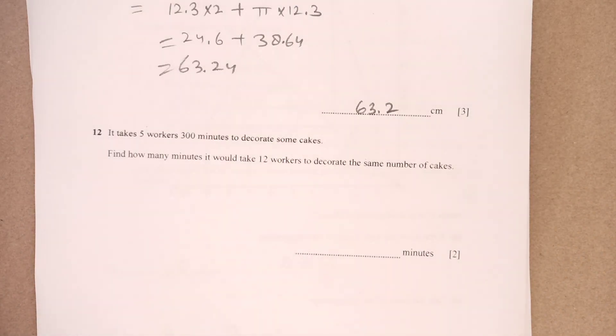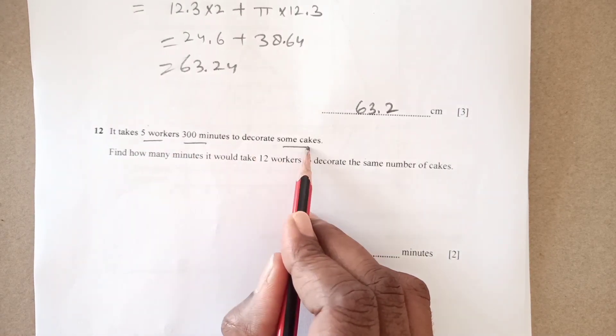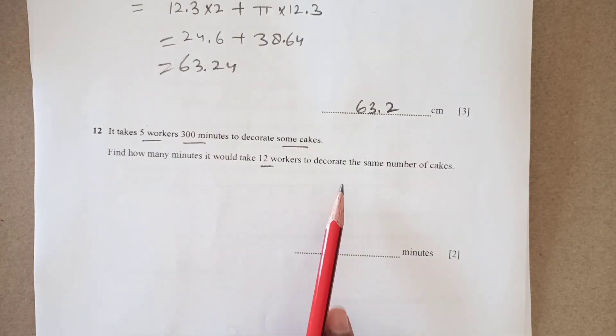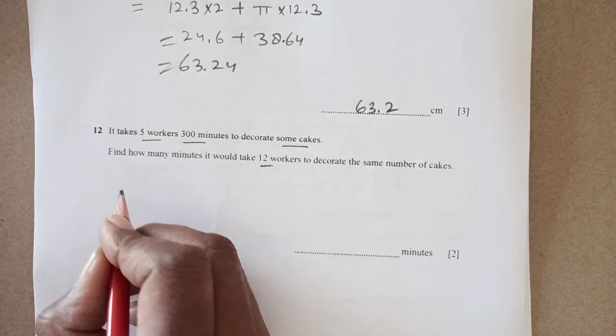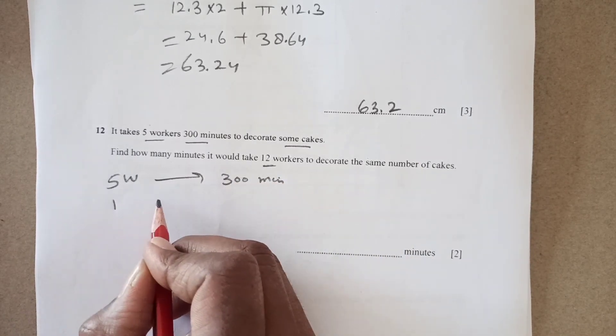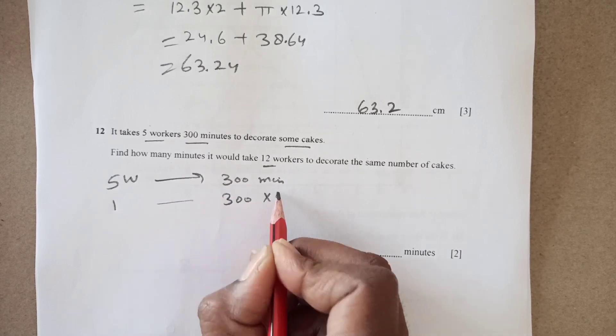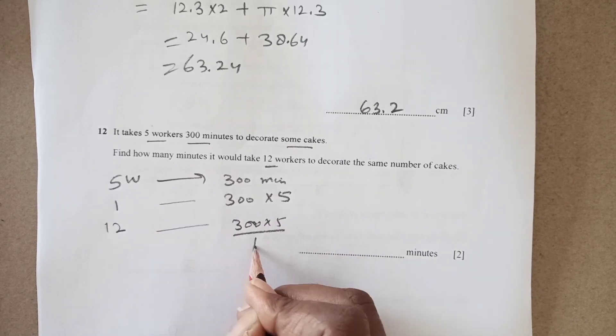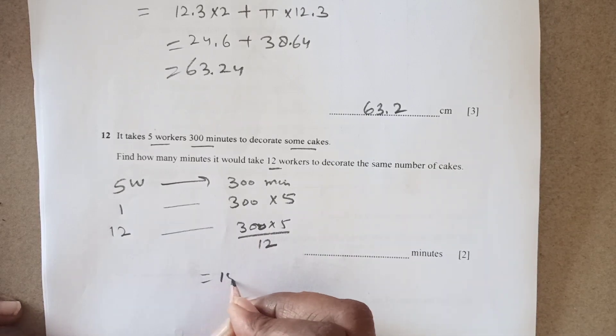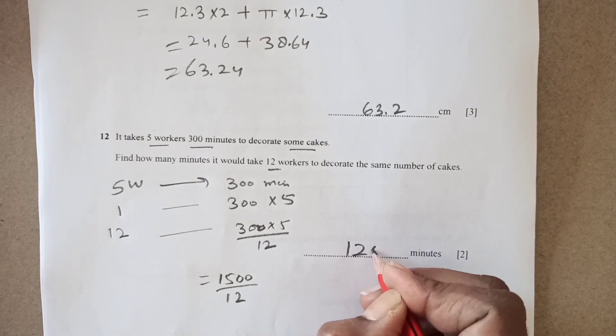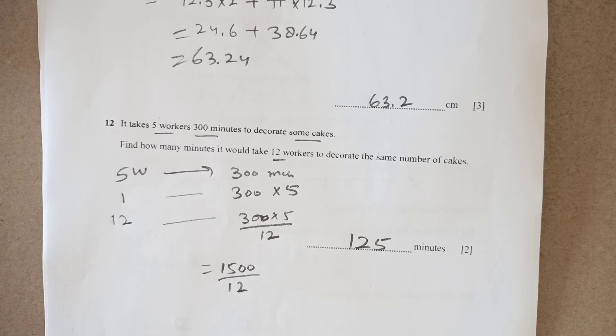Number 12 it takes five workers 300 minutes to decorate some cake. Find how many minutes would for 12 workers to decorate the same number of cake. Now you see that five workers take 300 minutes right. One worker is going to take more time. That means 300 times 5 then 12 workers are going to take less time. 300 times 5 over 12 right. Then we can just calculate this is 1500 divided by 12 gives you 125. 125 minutes will be taken. That's it for this video.